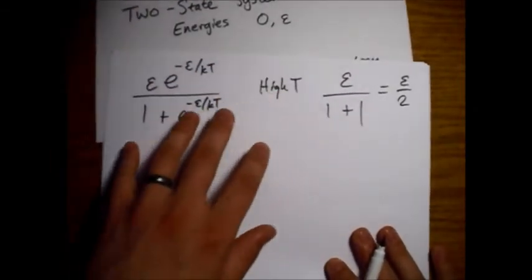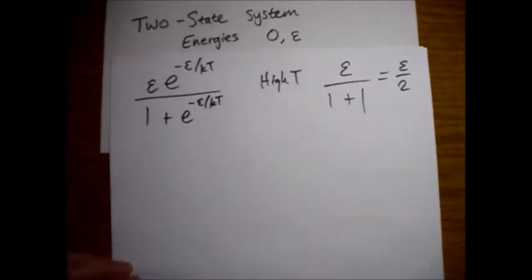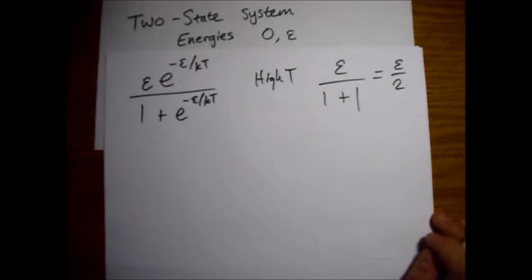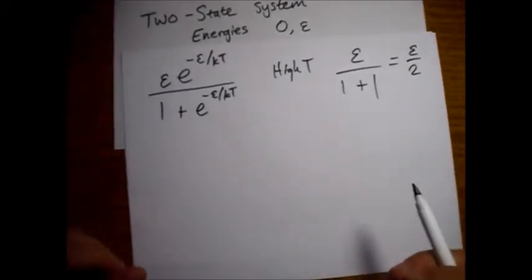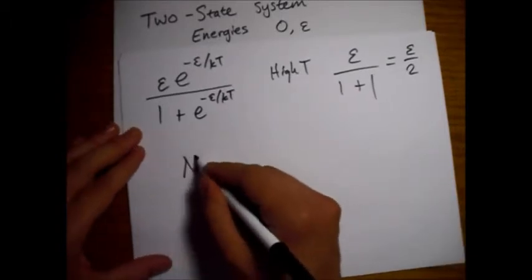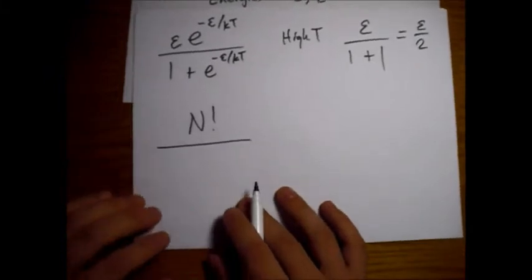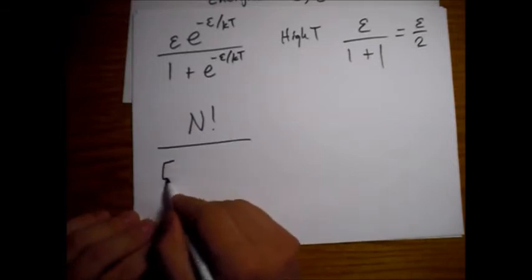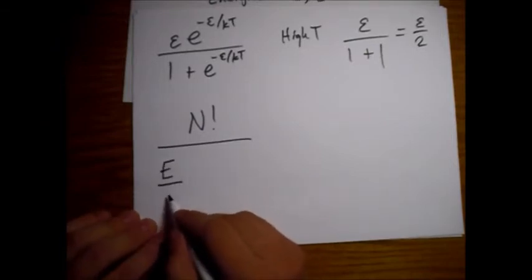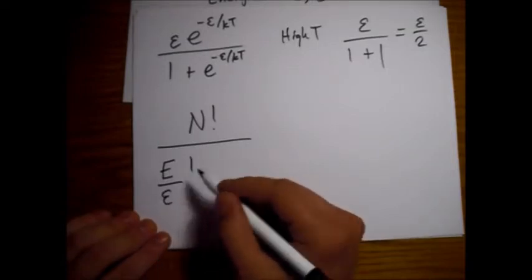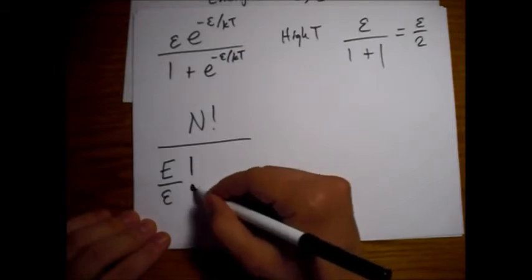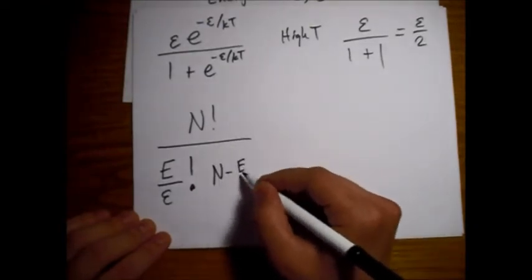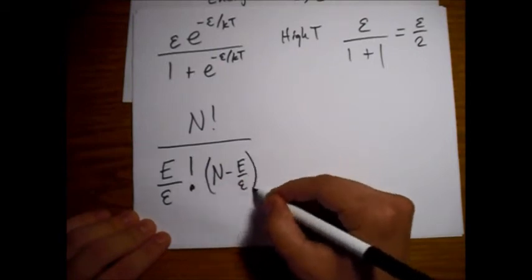So this was sort of from a canonical ensemble perspective. From a microcanonical ensemble perspective, where we're just counting microstates, we can look at the total number of atoms. And then there's the number of atoms that have energy epsilon. So this is N factorial divided by big E over epsilon factorial, and then we multiply it by the number that don't have energy, so that's N minus big E over epsilon factorial.